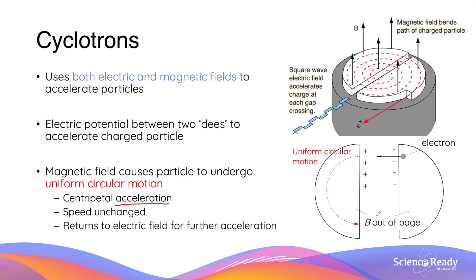However, once it returns to the electric field, the charge across the electric field is reversed to further accelerate the charged particle. When the particle accelerates it reaches the other side of the cyclotron, where another perpendicular magnetic field facilitates another round of circular motion. This process repeats, and every time the particle completes a circle its speed increases in a consistent manner. A major advantage of the cyclotron over linear accelerators is that acceleration is facilitated in a cyclic manner, so the size can be made much smaller, allowing particles to be accelerated to much higher speeds.